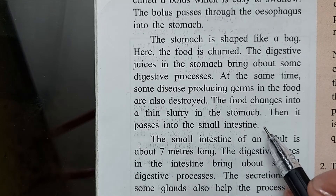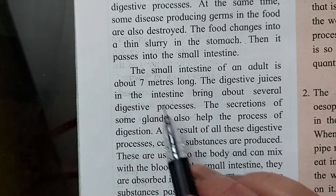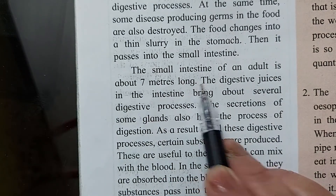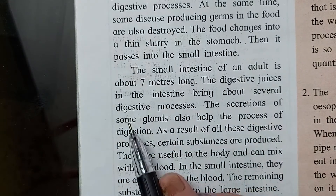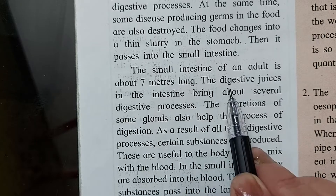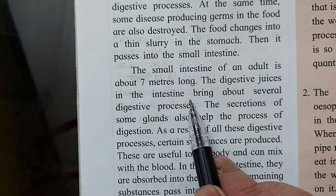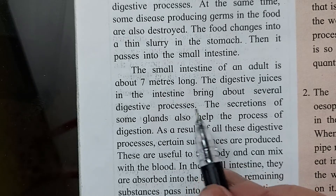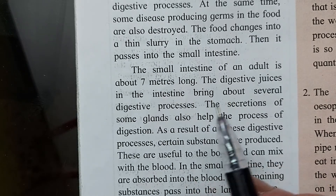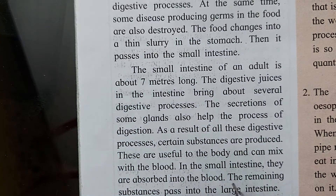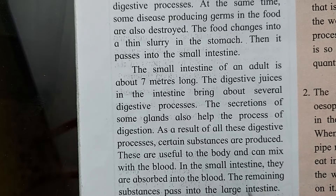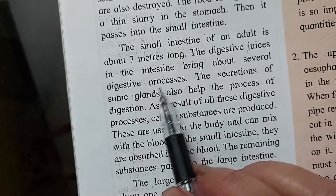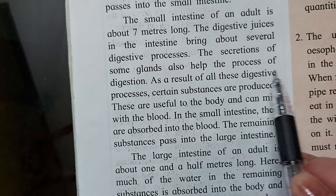Then the food passes into the small intestine. The small intestine of an adult is about 7 meters long. The digestive juices in the intestine bring about several digestive processes. Intestines produce intestinal juices; the stomach produces gastric juice; the pancreas produces pancreatic juice; and the liver produces bile. The secretion of these glands also helps the process of digestion.